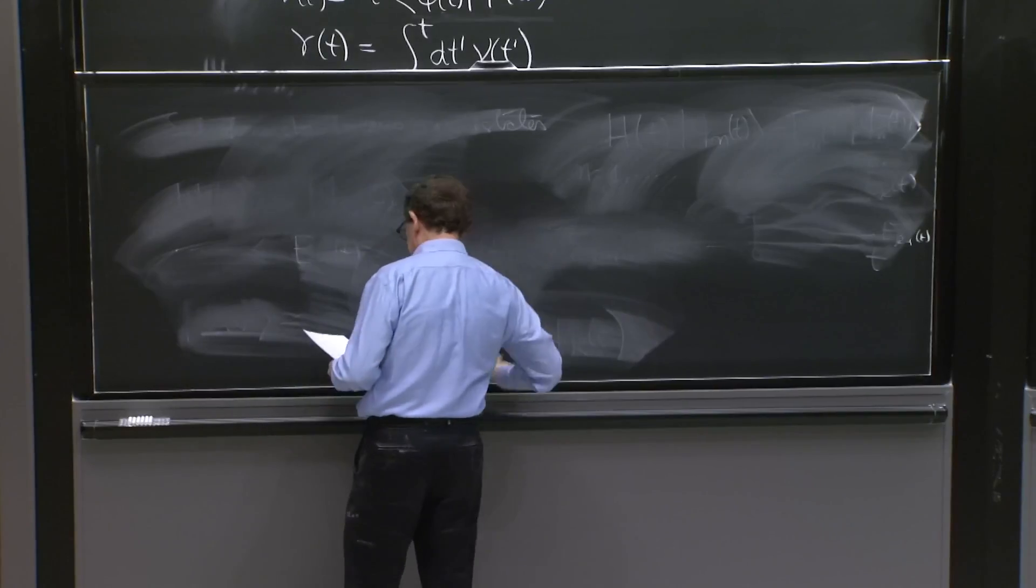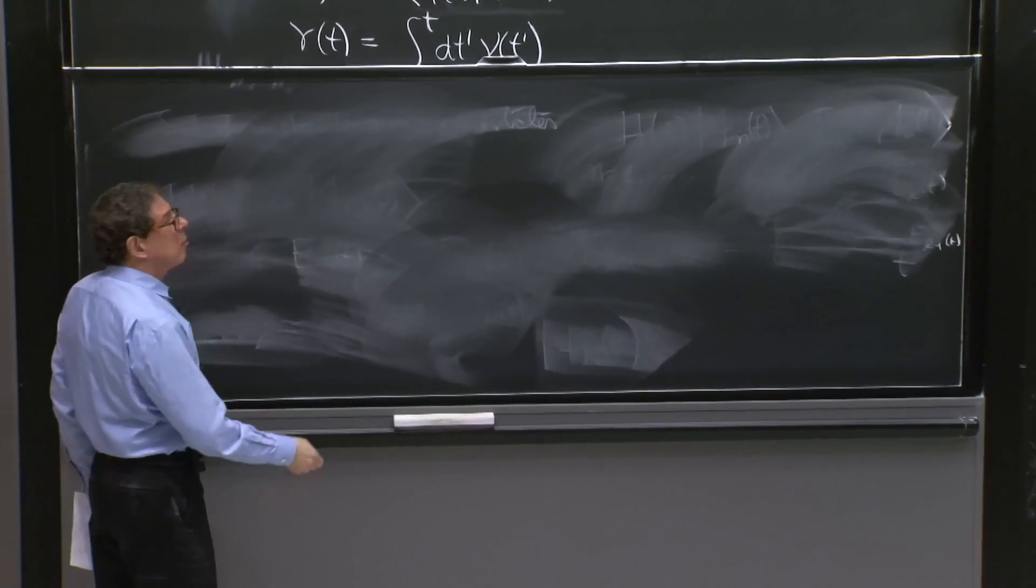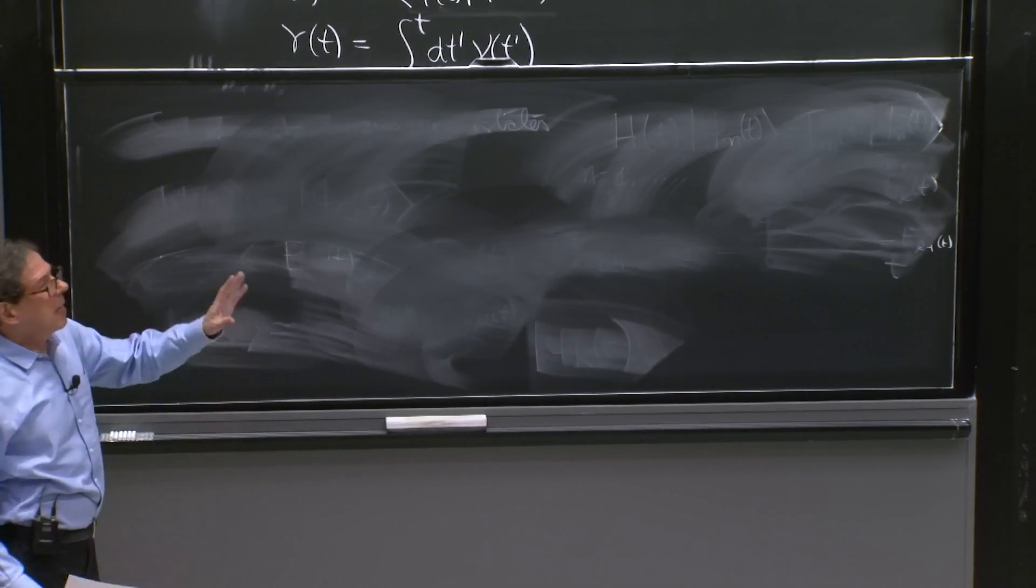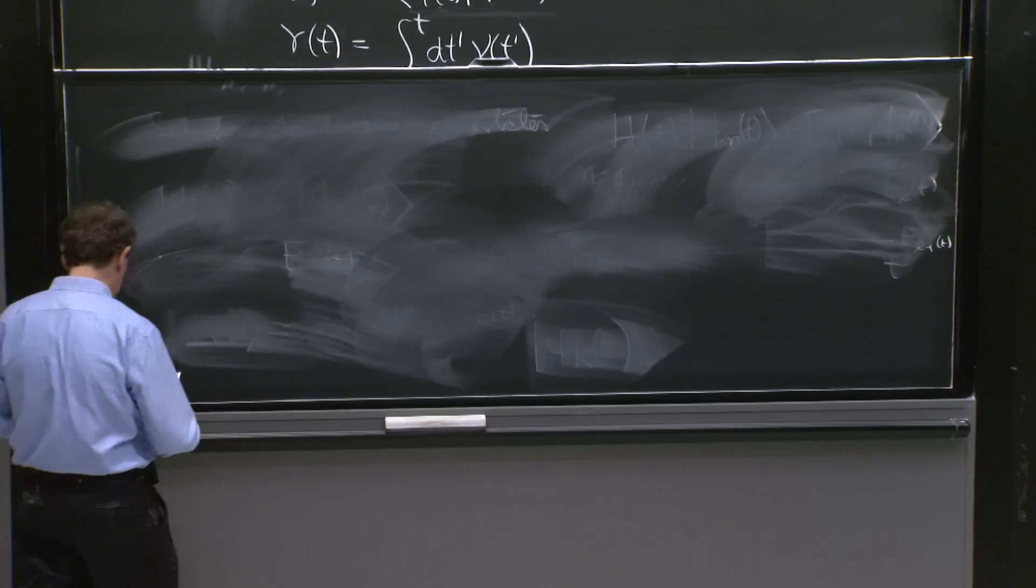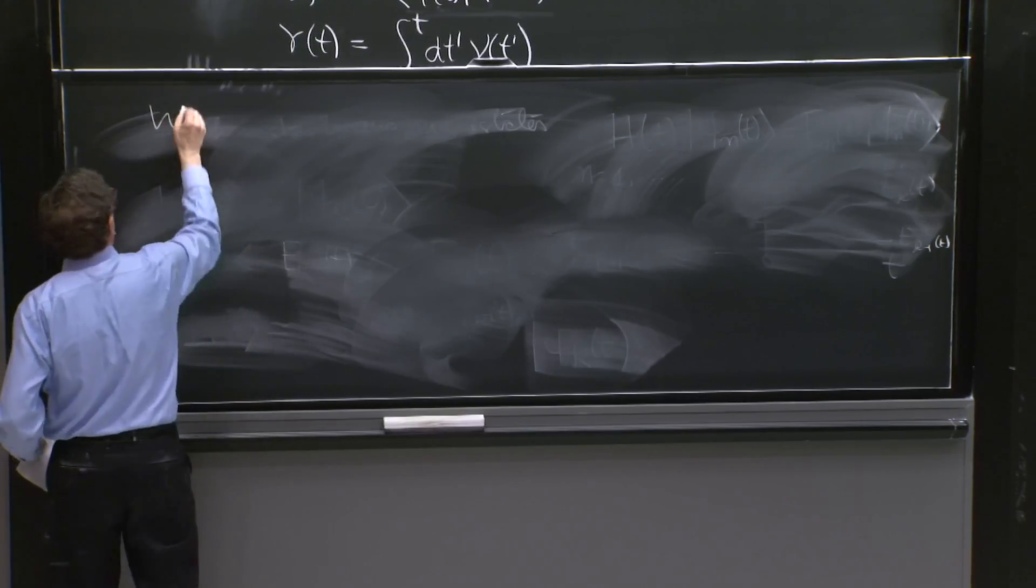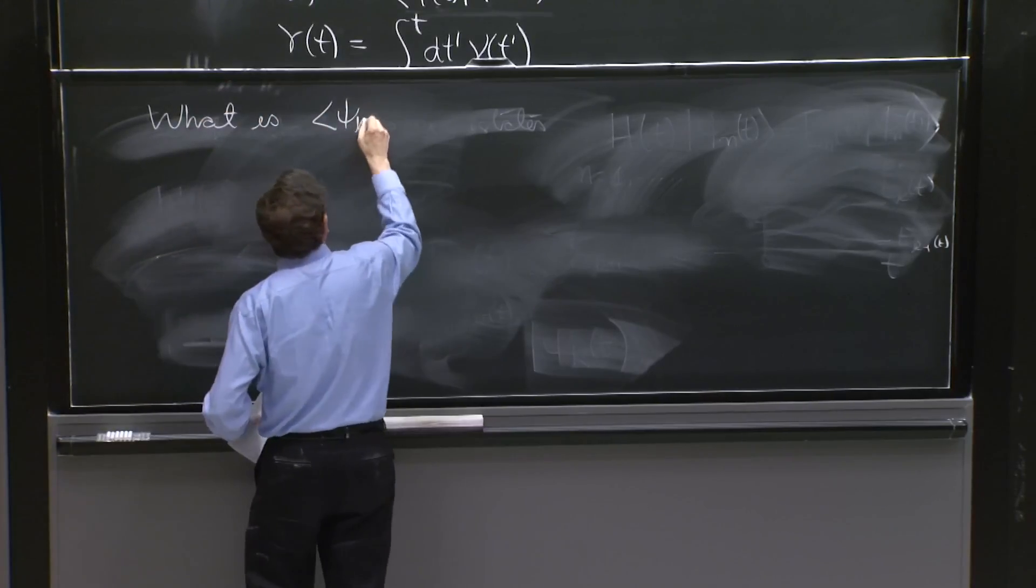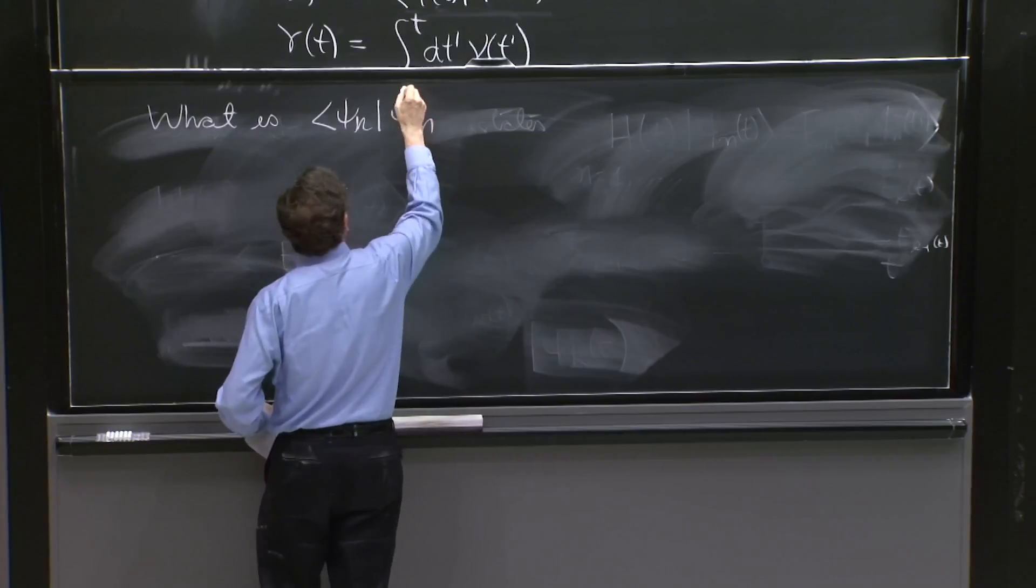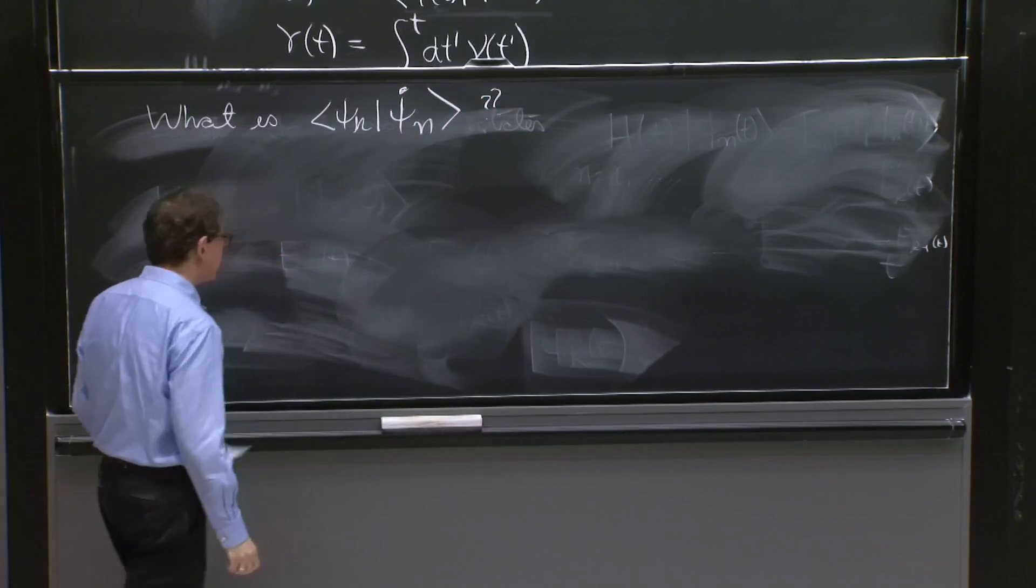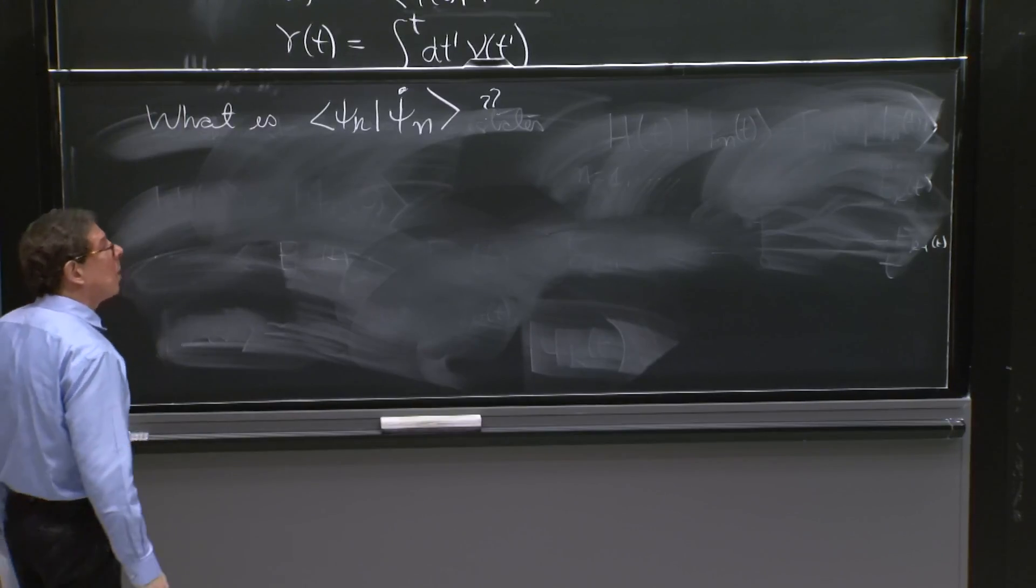So this is the coupling term. We try to understand what is that coupling psi k psi n dot. How can we write it? So what is psi k psi n dot?